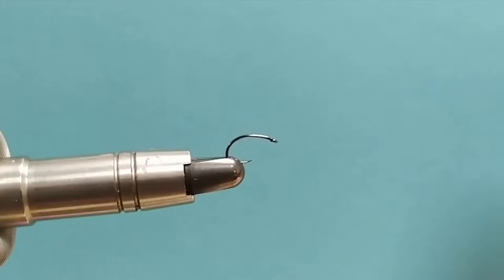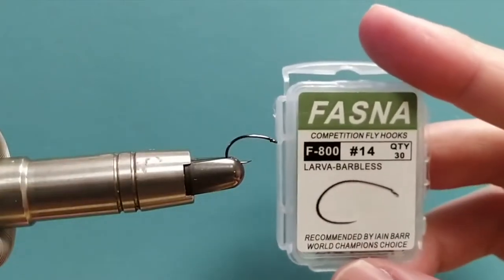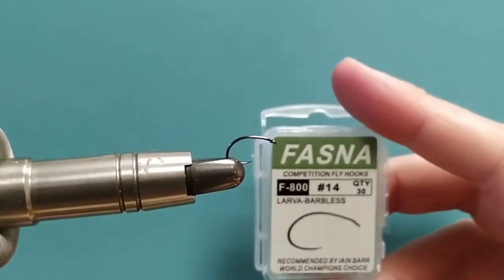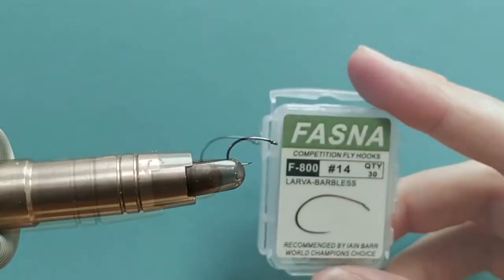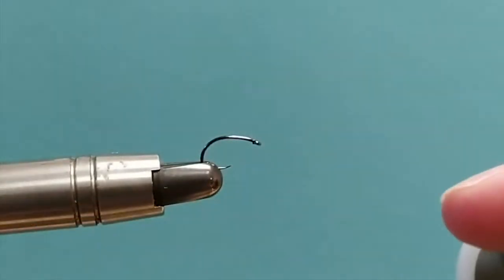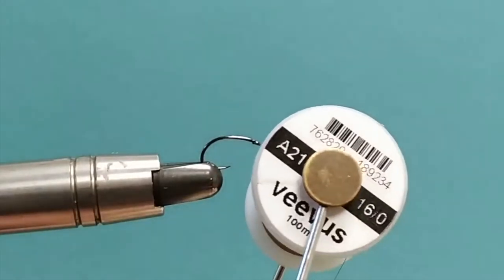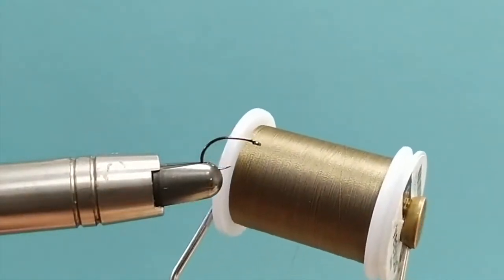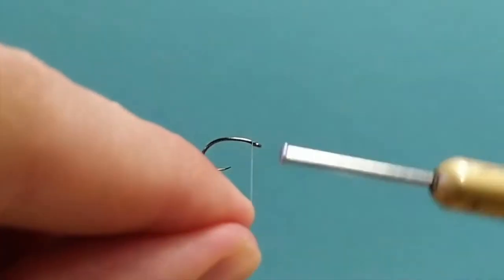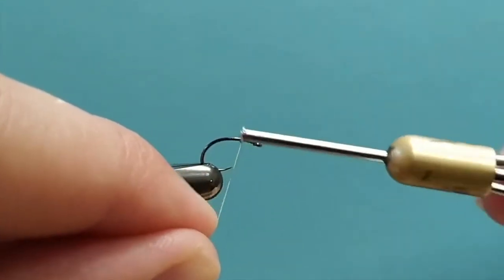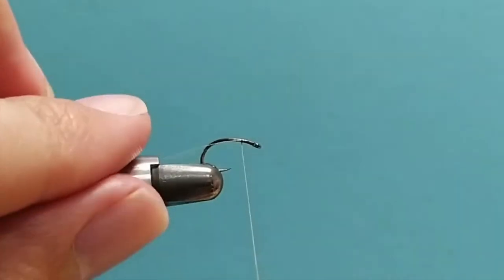In the vice we have a Fasna F800 lava barbless hook, size 16 even though the pack says 14. On top of that we're going to start by using the Veevus 16-0 in a dark olive color, and I think that's the most effective pattern as the water starts to warm up.